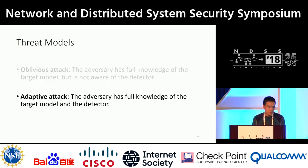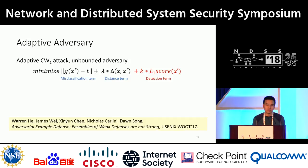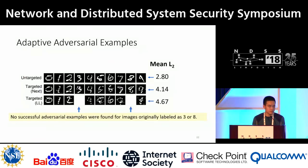Next, we probe whether a feature squeezing-based detector is robust against an adaptive adversary who knows everything about both the target model and our detector. We introduced the adaptive CW2 attack. The original CW2 attack has two terms in its objective function: the misclassification term and the distance term, and a modern solver searches for a perturbation that minimizes the objective. The adaptive CW2 attack adds one more term: the L1 score produced by our detector. To the best of our knowledge, this is the state-of-the-art adaptive adversary technique against feature squeezing.